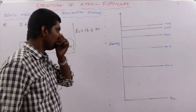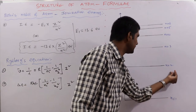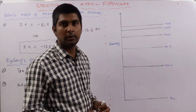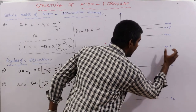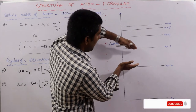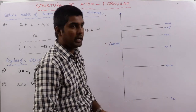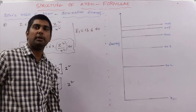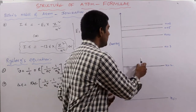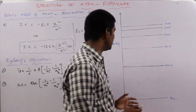As n increases, the energy difference between two successive energy levels decreases. The energy gap between levels 1 and 2 is large; between 2 and 3 it is smaller; and it keeps decreasing. More energy is required to excite an electron from n=1 to n=2 than from n=2 to n=3.